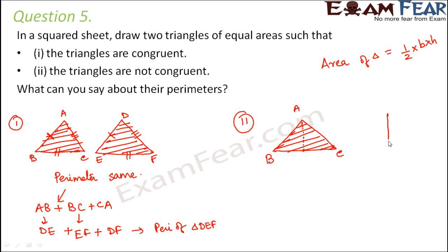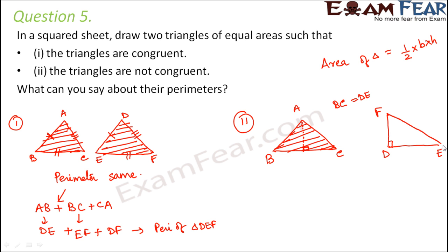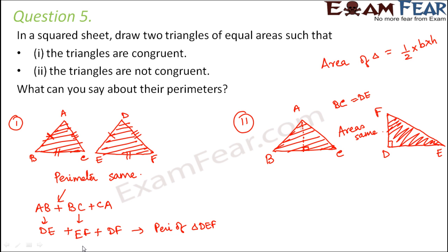Now if we draw another triangle with the same height and we ensure that the length of the base is the same as BC — let us name this base DE — so BC is equal to DE. We ensure that the height is perpendicular, and then we join the two ends. The area of this second triangle would be half into base into height. Since the base and height are the same as the first triangle, their areas are equal. But do you think they will be congruent? They will not be, because the first is a right angle triangle and the second is not.